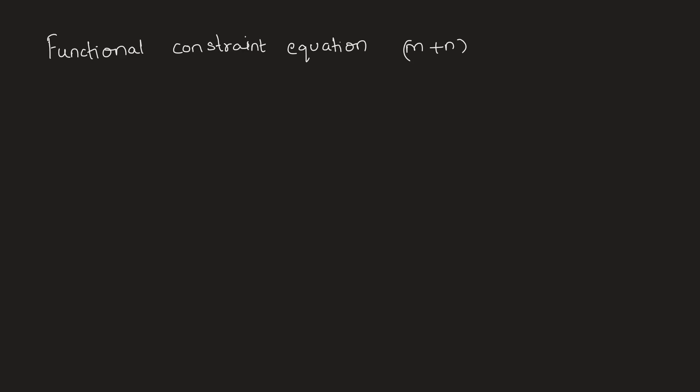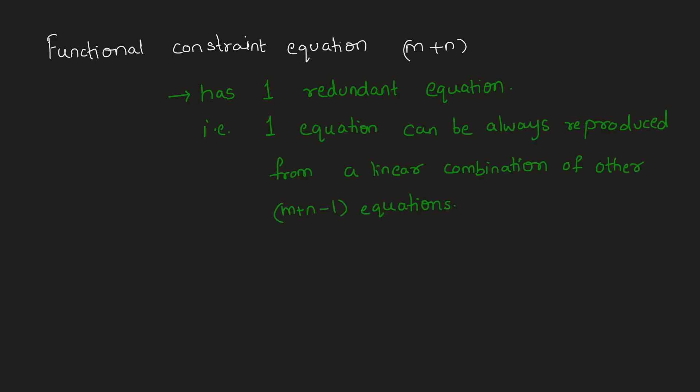In a transportation matrix, the number of unknowns are m × n and the number of functional constraint equations are m + n. But this set of m + n equations always has one redundant equation, meaning one equation can be reproduced from the linear combination of the other m + n − 1 equations.